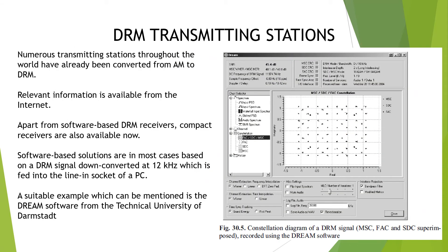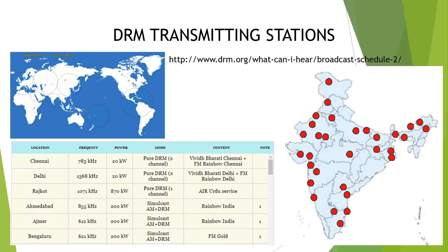Numerous transmitting stations throughout the world have already been converted from AM to DRM. Relevant information is available on the internet. Apart from software-based DRM receivers, compact receivers are also available. Software-based solutions are mostly based on the DRM signal down-converted to 12 kilohertz and fed into the line-in socket of a PC — a suitable example is the Dream software from the Technical University of Darmstadt. The DRM transmitting stations website is drm.org.